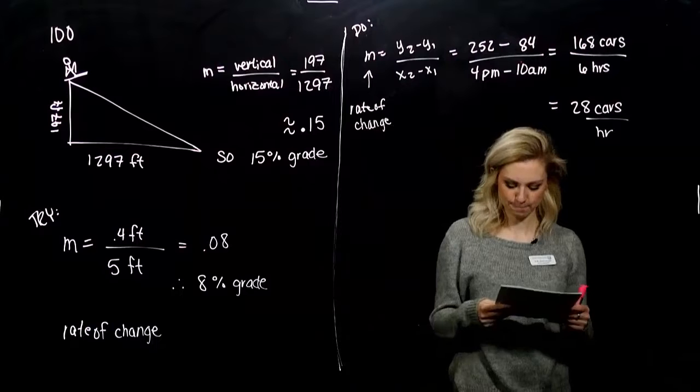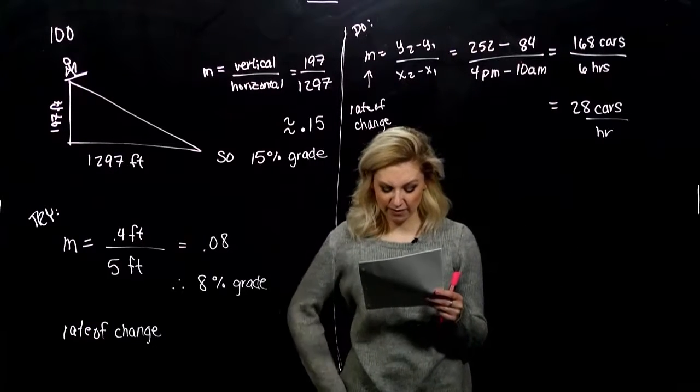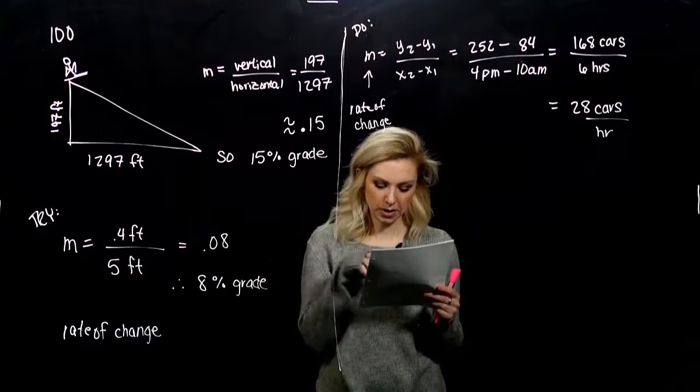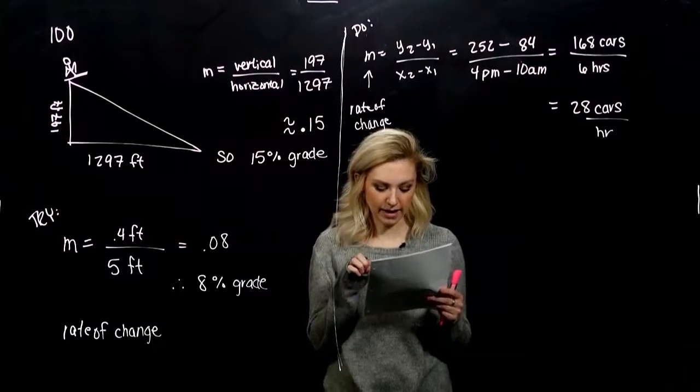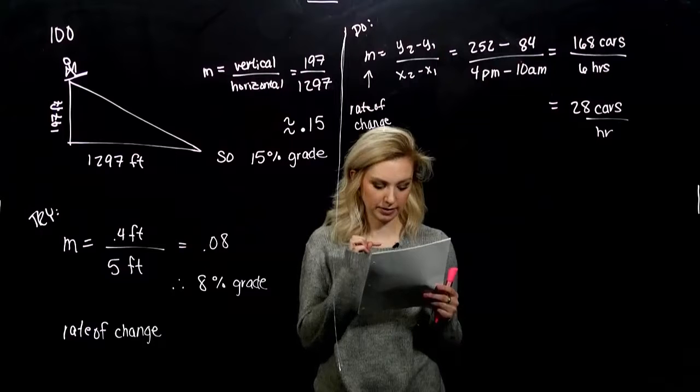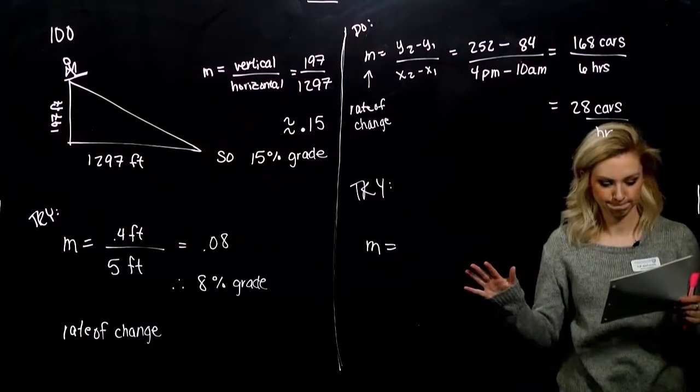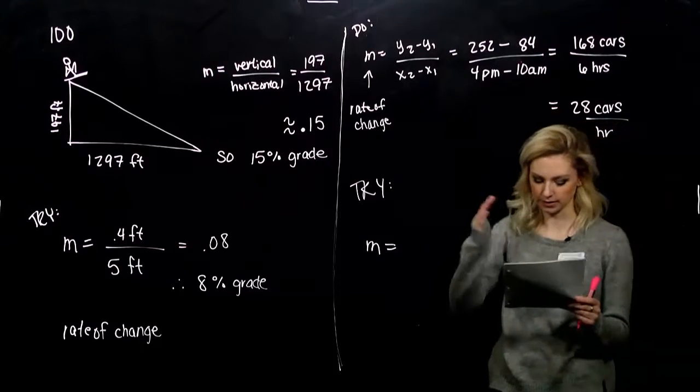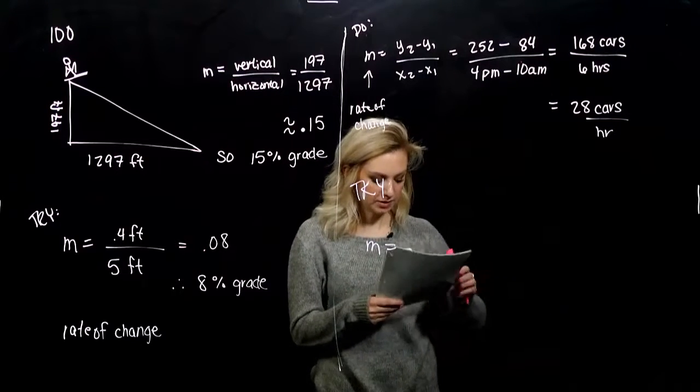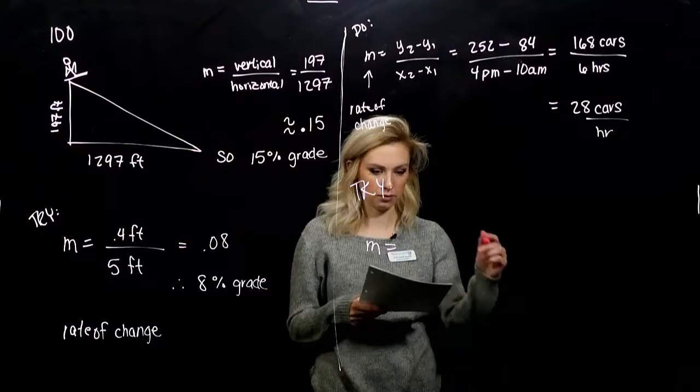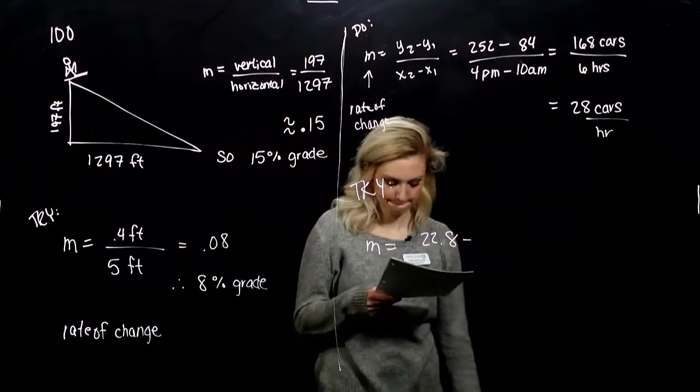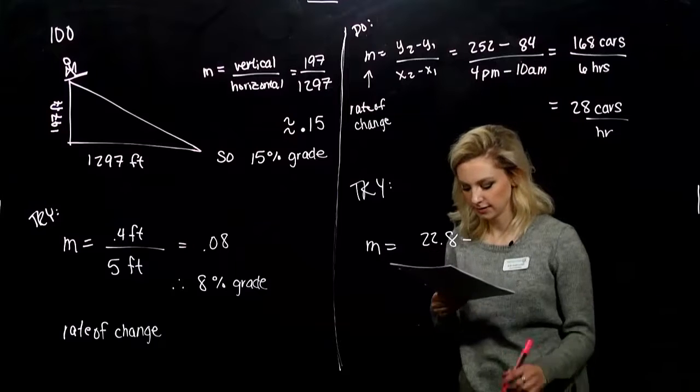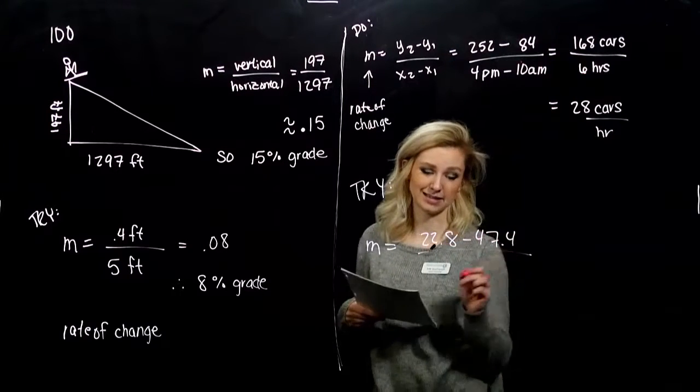One last thing for you to try. Print newspaper advertising revenue has been decreasing since 2005. Makes sense, because everything is going digital. We want to use the following graph to determine the rate of change in the advertising revenue with respect to time. So just looking at the picture, it's decreasing, which makes sense. They're losing money as time goes on, because everything is going digital. So I'm going to start. In 2010, what was the revenue? 22.8 billion dollars. And in the beginning, 2005, we were looking at 47.4 billion dollars. That's substantial.